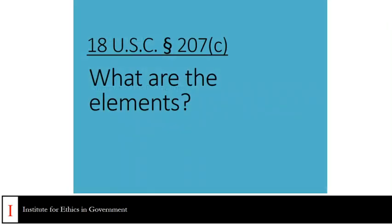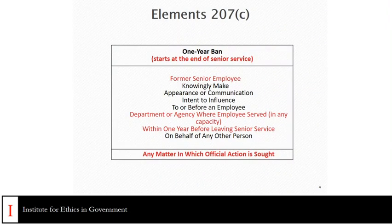So what are the elements? 207C is a one-year bar that begins at the end of an employee's senior service. It applies to former senior employees as that term is defined by statute. It prohibits them from knowingly making any appearance or communication with the intent to influence to or before an employee of any department or agency where the employee served in any capacity within one year before leaving senior service, if that communication or appearance is on behalf of any other person or organization, and it's in connection with any matter in which the employee seeks official action from his or her former agency.